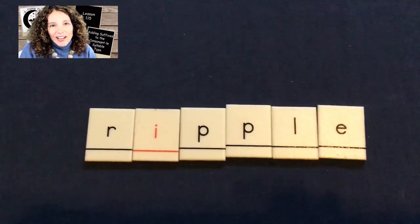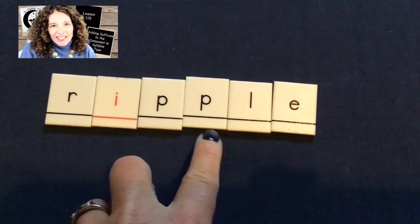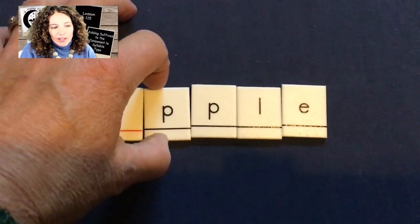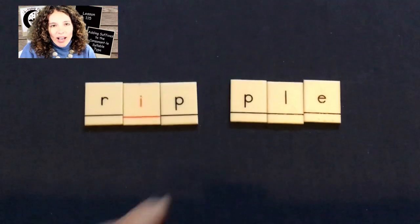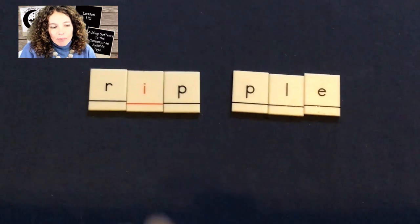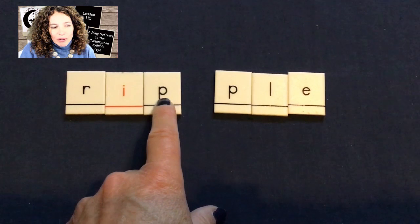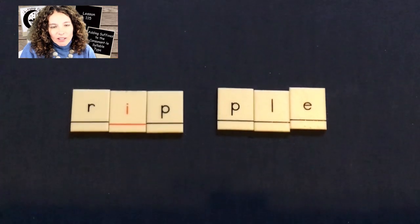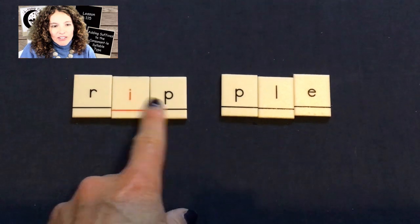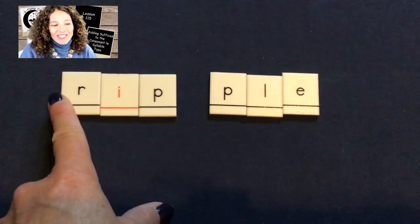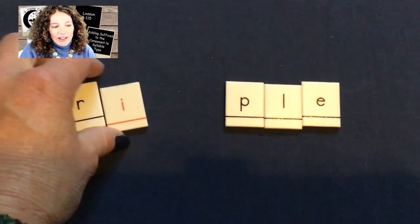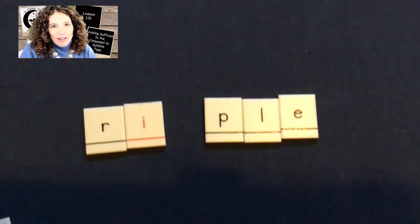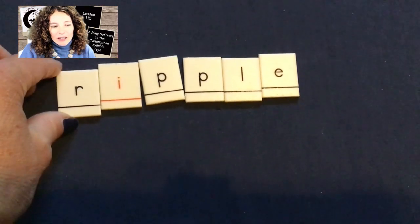In our last lesson, we discussed how sometimes there's this doubling of consonants that occurs when we are dealing with the consonant LE syllable type. In the word ripple, if I separate the two syllables it's much easier to see why this happens. We have to have the P in the first syllable because this is a closed syllable — rip. Then the second syllable has to have P-L-E because the P is necessary for the consonant LE syllable type. If we didn't have it, we'd have an open syllable and the I would say its name. We have to have the short I, so we need a closed syllable — that's why that second P is necessary.